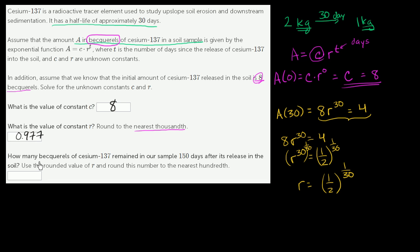Then they finally say, how many becquerels of cesium-137 remain in our sample 150 days after its release in the soil? Use the rounded value of R and round this number to the nearest hundredth. We already know C and R.